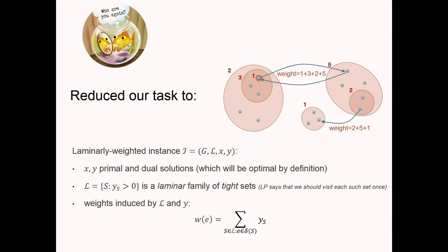We have proved: a ρ-approximation algorithm for laminarly-weighted instances yields a ρ-approximation for general ATSP. The LP value is twice the sum of all dual y-values. So remember: we've reduced to instances with a primal and dual solution, a laminar family of tight sets, and weights induced by the dual.